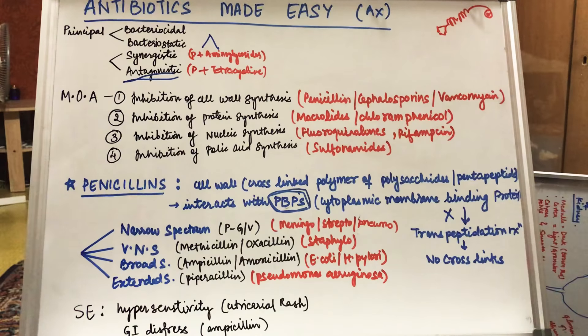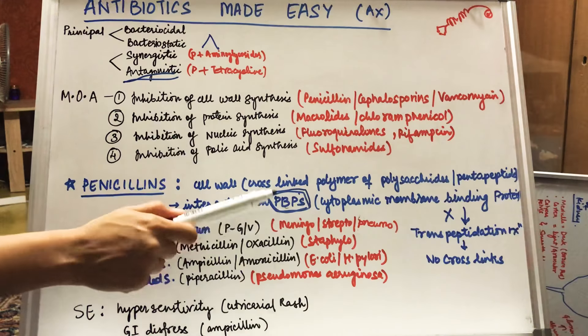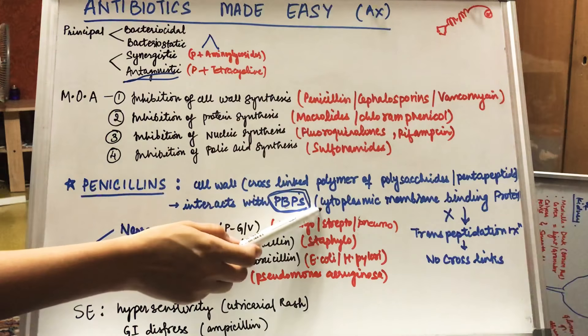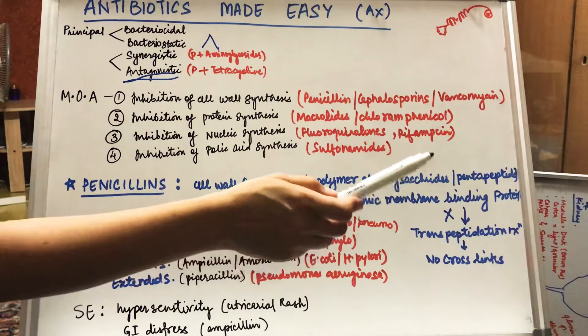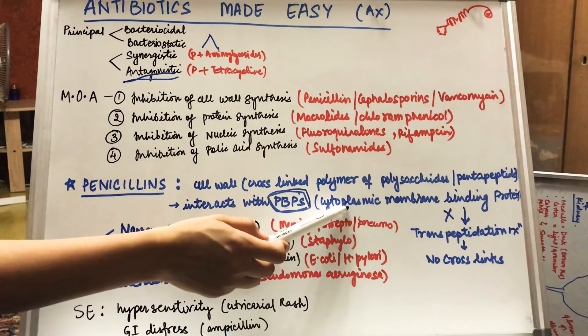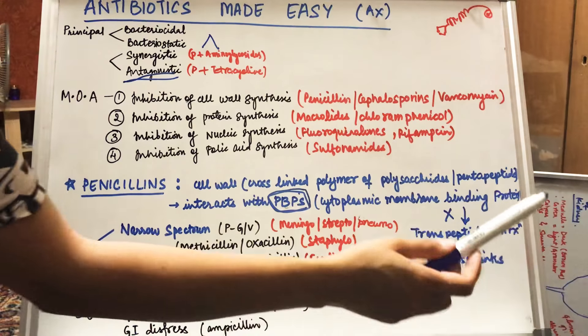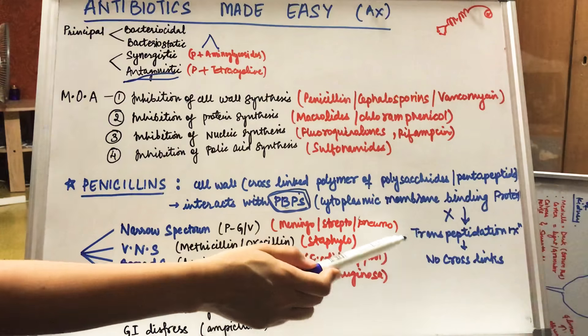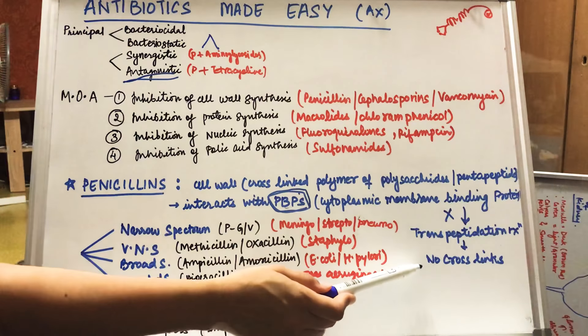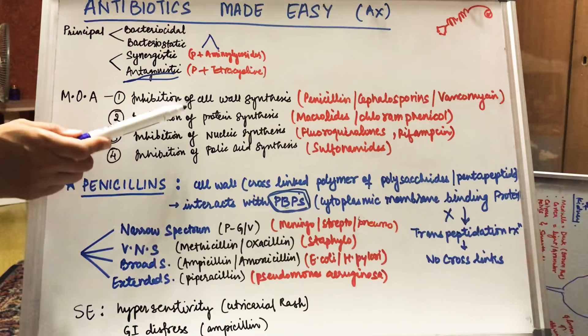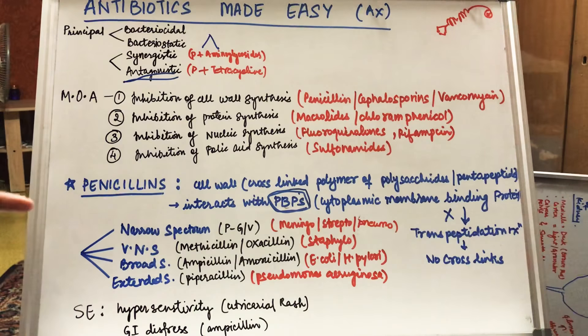To repeat: penicillin interacts with PBPs, which are cytoplasmic membrane binding proteins that inhibit the transpeptidation reaction. No transpeptidation means no cross linking, and no cross linking means no cell wall synthesis. This is how penicillin works.